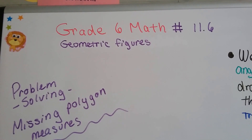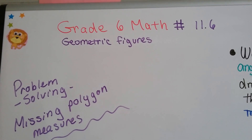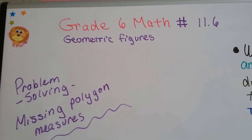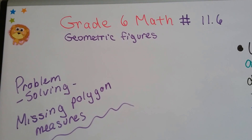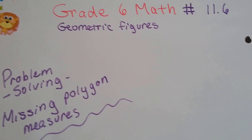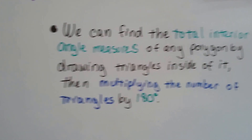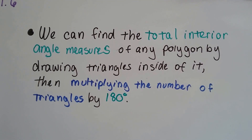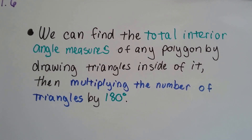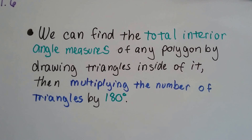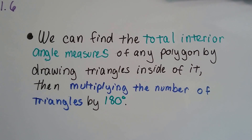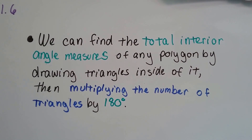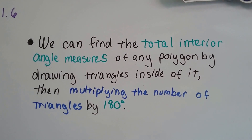Grade 6 math, number 11.6: Problem Solving Missing Polygon Measures. We can find the total interior angle measures of any polygon by drawing triangles inside of it, then multiplying the number of triangles by 180 degrees.